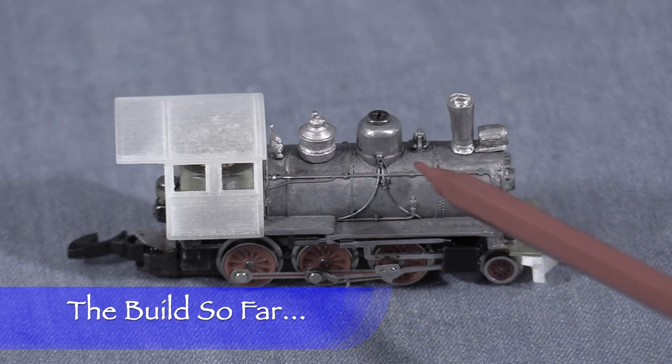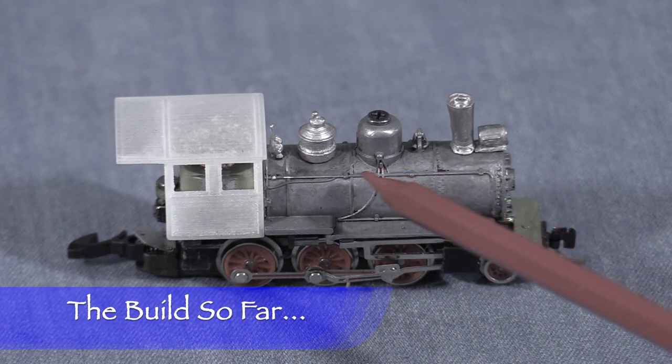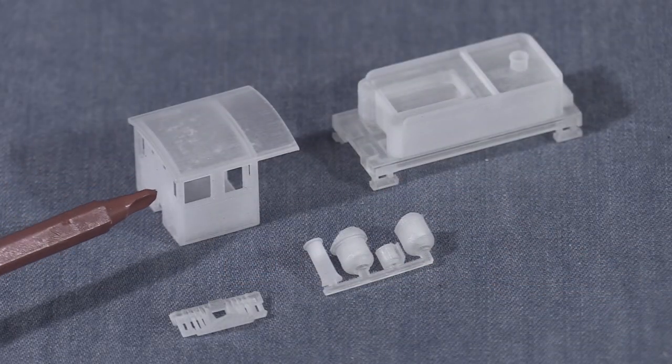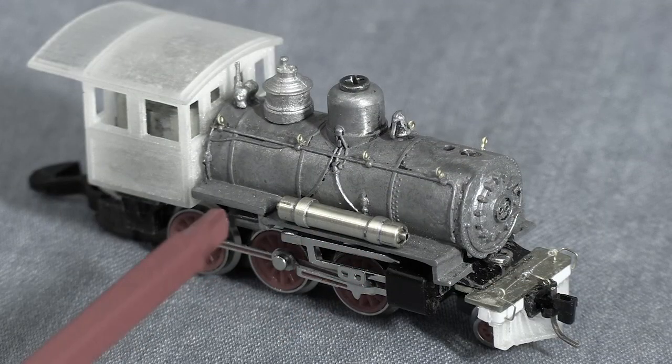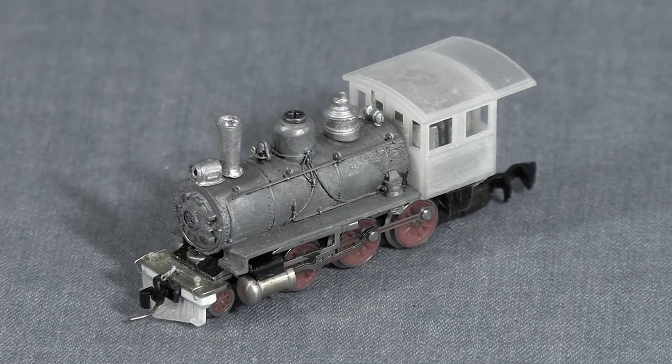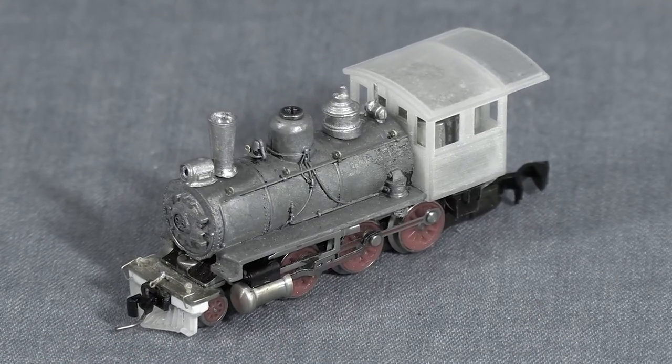So far in this build, I've modified an N-Scale River Rossi 040 boiler to fit my Marklin Z 260 mechanism. I've added a 3D printed cab from Shapeways and added both commercial and fabricated details to the locomotive. In the last episode, I've finished detailing the locomotive to the point where it's ready for paint.